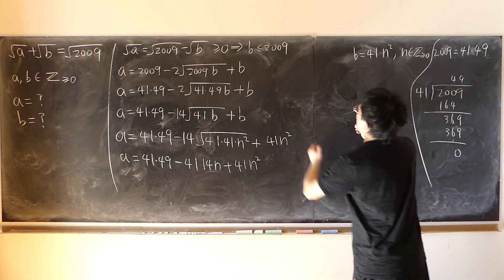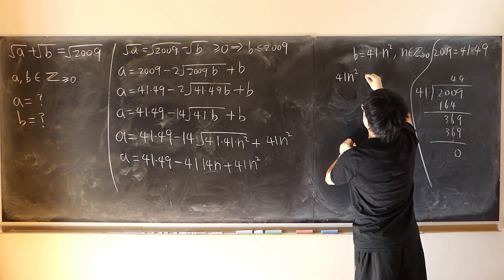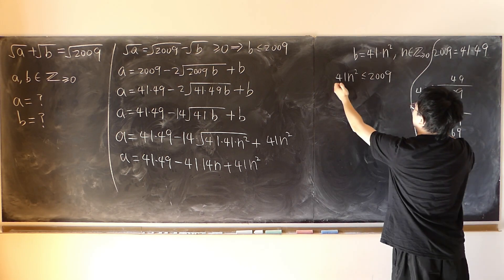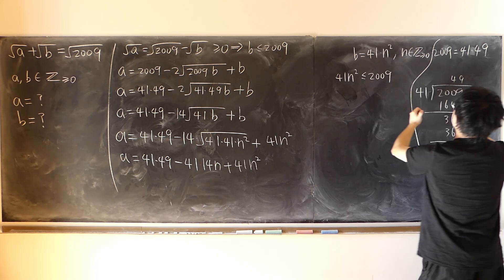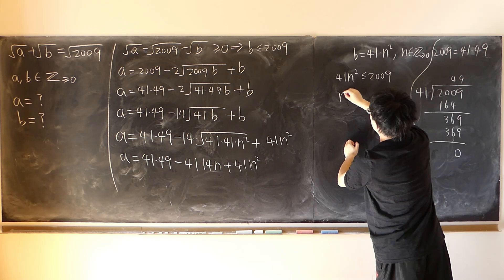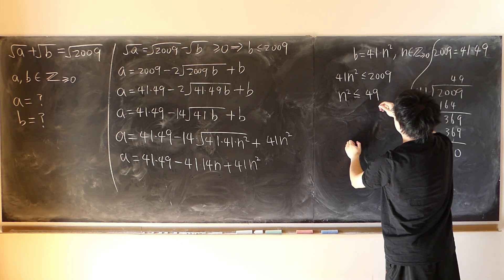So in other words, since b is less than, so 41 times n square is less than or equal to 2009. Divide both sides by 41. We know that 41 times 49 is 2009. So immediately, n square is less than or equal to 49.